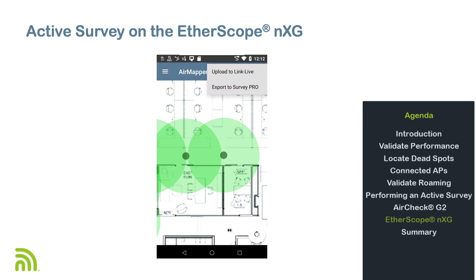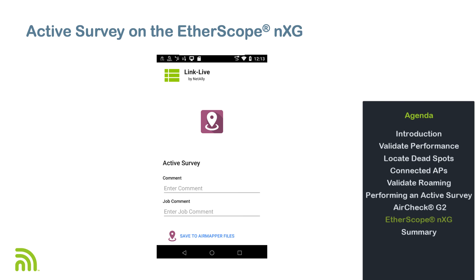You will be given two options: Upload to LinkLive and Export to SurveyPro. Upload to LinkLive will use an active internet connection to upload the survey data to your LinkLive account. Export to SurveyPro will save the survey data locally using a .AMP extension; this file may be transferred to a computer running AirMagnet SurveyPro for offline analysis and reporting. In this case, I'll upload my survey data to LinkLive.